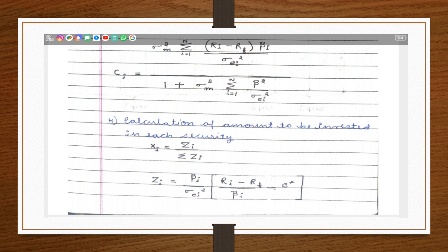This is the variance of stocks, the stock's unsystematic risk which is unique for a firm, upon 1 plus sigma m square into beta square summation of beta square by sigma Ei square. This is the formula to calculate the Ci, the cutoff rate.